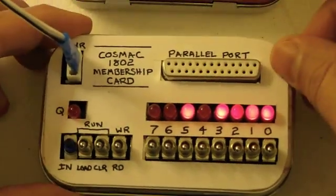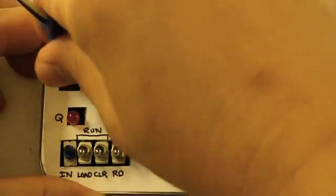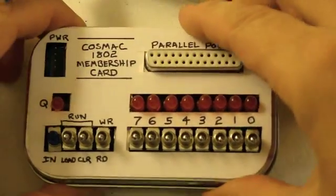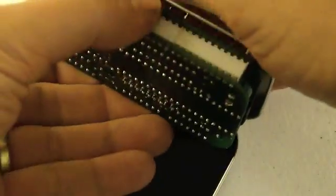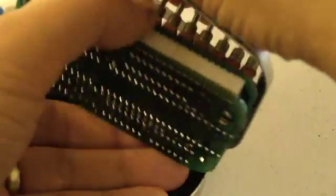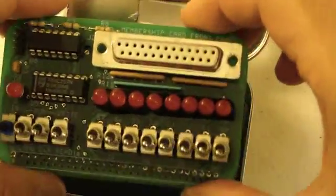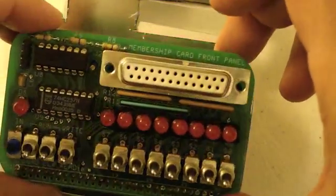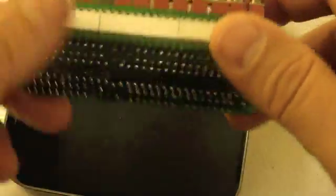This kit, like I said, fits in an Altoid can and is composed of two boards. The top board contains the LEDs, the switches, the interface needed for the parallel port which can be used to program it.